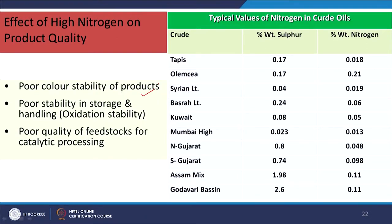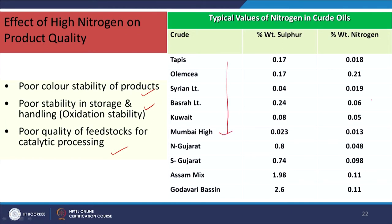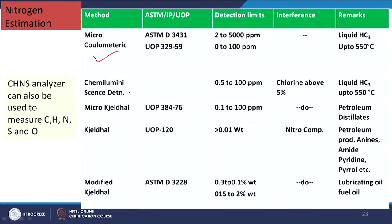For nitrogen, it causes poor color stability of products, poor stability in storage and handling, and poor quality of feedstocks for catalytic processing — so its removal is important. Nitrogen can be determined by micro-colorimetric, chemiluminescence, and modified Kjeldahl methods. Different products and detection limits apply. Apart from these, CHN or elemental analysis can be done to measure carbon, hydrogen, sulphur, nitrogen, and oxygen of the crude oil sample.